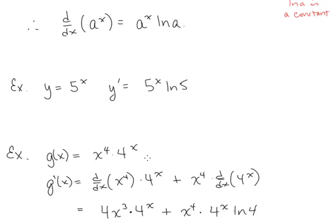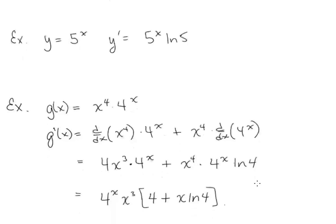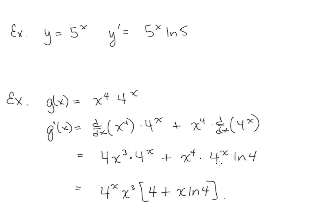Here's a more complicated example involving the product rule. We have g of x equals x to the 4th times 4 to the x. So g prime is derivative of the first times the second, plus first times derivative of the second. Derivative of x to the 4th is 4x to the 3rd, multiplied by 4 to the x, plus x to the 4th multiplied by 4 to the x ln 4. Simplifying, we factor out 4 to the x and x to the 3rd, leaving 4 plus x ln 4.